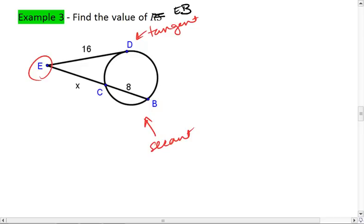Okay, because we're using the theorem above, I'll deal with the secant first. I want to use the entire secant, x plus 8, multiplied by the part of the secant that is outside of our circle. So times x. This is going to equal the tangent segment times itself.